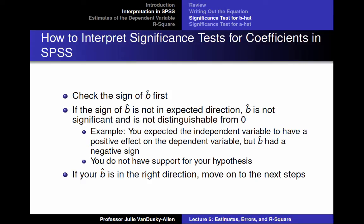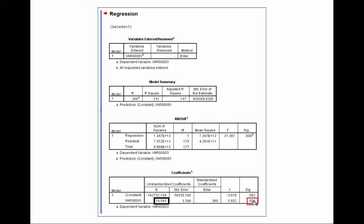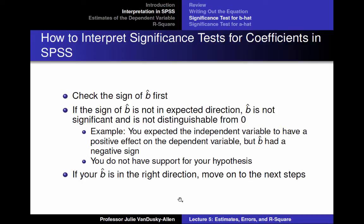The next step is determining if b-hat and a-hat are different from zero through the significance test in the regression output. First, look at the sign of b-hat. If it is not in the expected direction, then b-hat is not significant and is indistinguishable from zero — for example, if you expected a positive effect but b-hat was negative, it is automatically insignificant and you do not have support for your argument. If your b-hat is in the right direction, move on to the next steps.